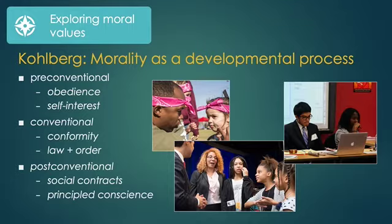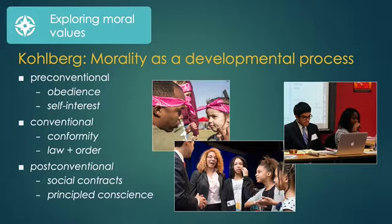This is followed by the conventional stage, where the reasoning reflects a concern about conforming, fitting in with the group, and law and order punishment. The post-conventional stage in Kohlberg's model is when people demonstrate the capacity to understand the importance of social contracts, agreements, and oaths that hold people, society, and mutual commitments together. This is also when a person can weigh competing moral commitments to social contracts, laws, family members, and core moral values and principles such as do no harm.